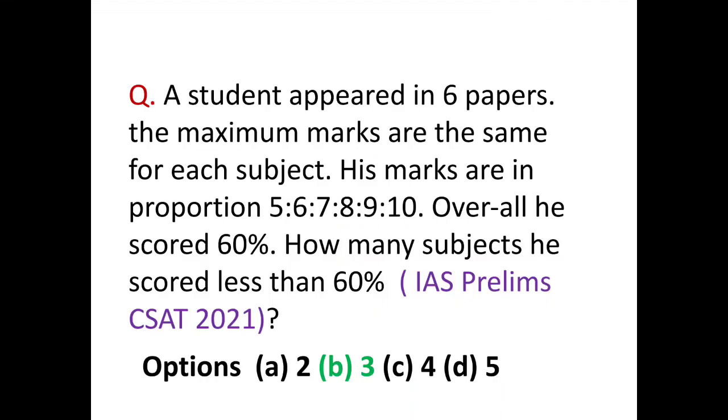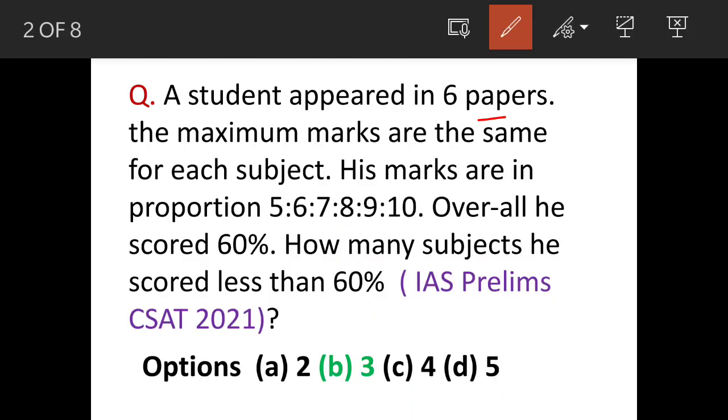The question is: a student appears in six papers and maximum marks are same for each subject. His marks are in proportion which is given here. Overall he scores 60 percent. So the question is, how many subjects he scored less than 60 percent?